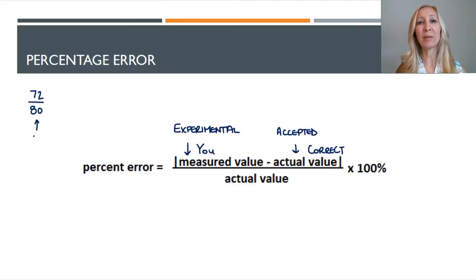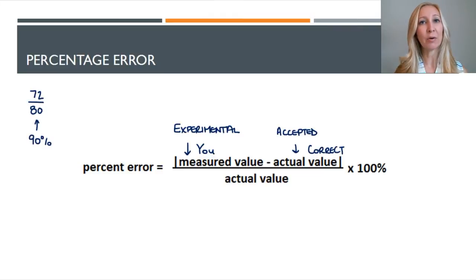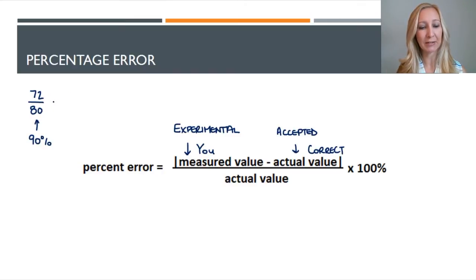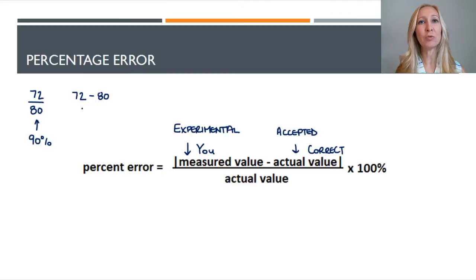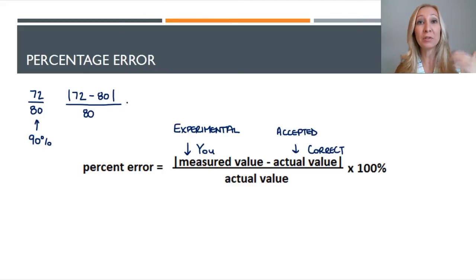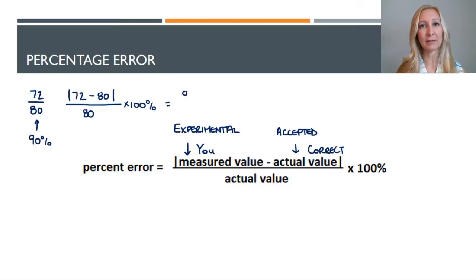You probably do this all the time when you figure out how well you did on a test. Say you got 72 out of 80 — 72 points out of 80 is your score, and you type that into your calculator and get 90%. To do this using percent error, we do a similar thing: we take 72 minus 80, figuring out how many points off we were from the total we should have gotten, then divide by that total and multiply by 100%.